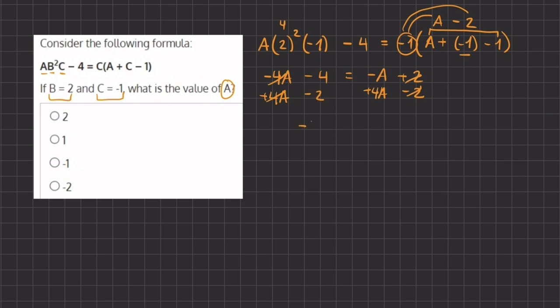So on this side we have a negative 6 equals 3A.